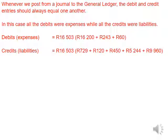So whenever we post from a journal to the general ledger, the debit and the credit entry should always be equal to one another. In this case, all the debits are expenses while all the credits are liabilities. Our debits are the $16,000 for gross salaries plus the contribution for the pension fund and the contribution for the UIF. While the credits are the pension fund with both the deduction and the contribution, the UIF with both the deduction and the contribution, and the medical aid.